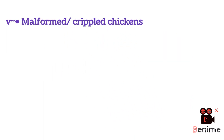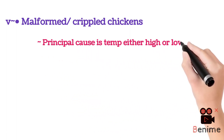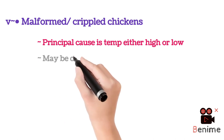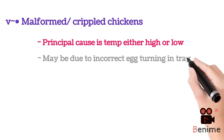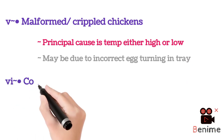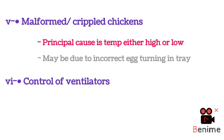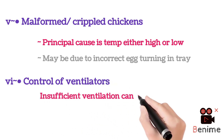The fifth cause is malformed or crippled chicks produced after hatching. The principal cause is temperature — either too high or too low — which is responsible for hatching malformed or crippled chicks. It may also be due to incorrect egg turning in trays, so inappropriate egg turning and the angles used should be carefully noted.